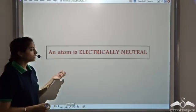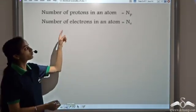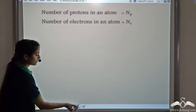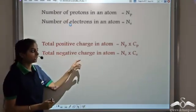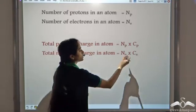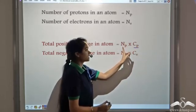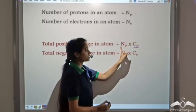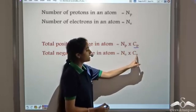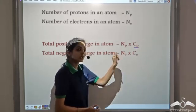When experiments were performed, it was found that the atom is always electrically neutral. So if in an atom the number of protons is NP and the number of electrons is NE, then the total positive charge in the atom becomes NP times CP, where CP is the charge on one proton. Similarly, the total negative charge is given by NE times CE, where CE is the charge on one electron.